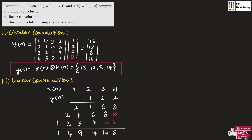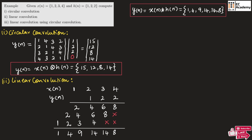So the linear convolution result is 1, 4, 9, 14, 14, 14, and 8. This is the sequence for linear convolution.